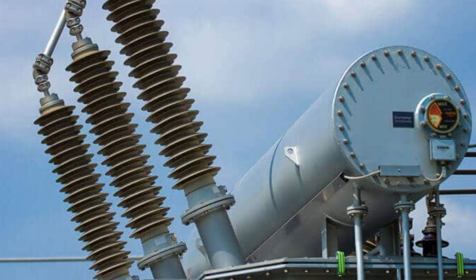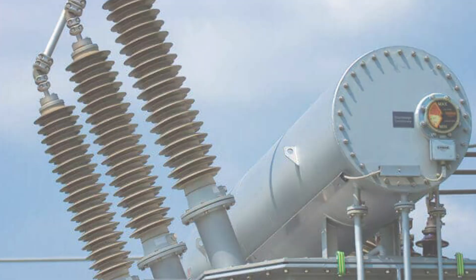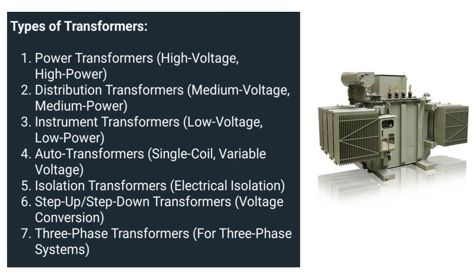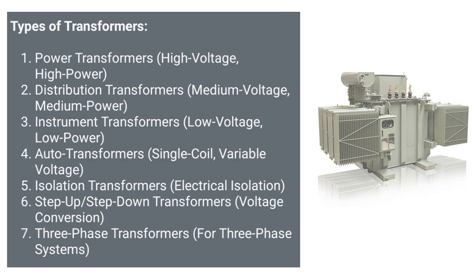There are many different kinds of transformers used for industrial purposes, such as power transformer, distribution transformer, instrument transformer, auto transformer, isolation transformer, step-up and step-down transformer, and three-phase transformer. These are the types of transformers.